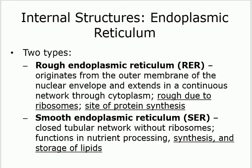Endoplasmic reticulum: 'endo' means inside, 'plasmic' means cytoplasm, 'reticulum' means a network. So the endoplasmic reticulum is a network inside the cell. It can be rough — if it has ribosomes on its surface, which makes it look rough — or smooth. The rough ones have ribosomes on the surface, and since ribosomes are for protein synthesis, the rough ER is responsible for protein synthesis.